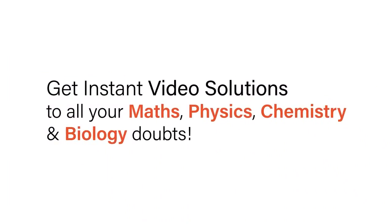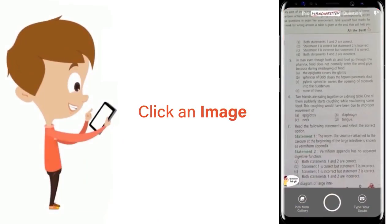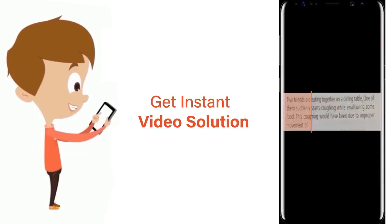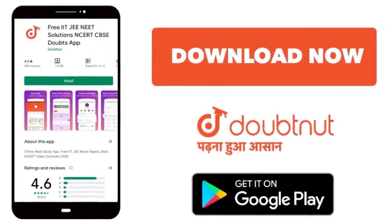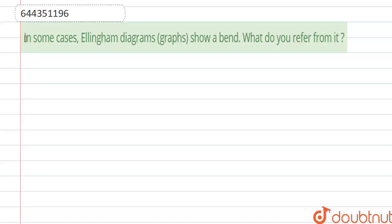With Doubtnet, get instant video solutions to all your maths, physics, chemistry, and biology doubts. Just click the image of the question, crop the question, and get instant video solution. Download Doubtnet app today. Hello everyone, here the question is: in some cases, Ellingham diagrams show a bend. What do you infer from it?